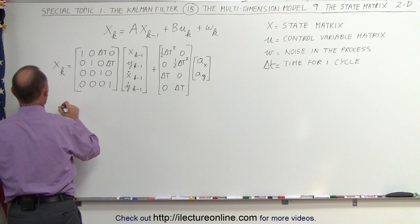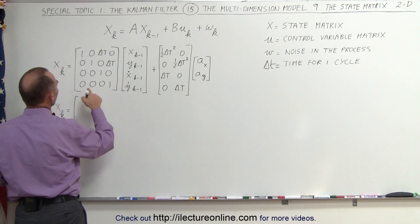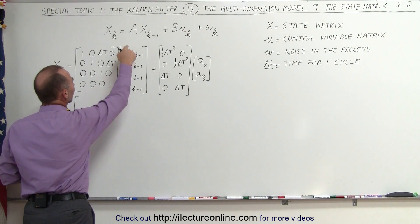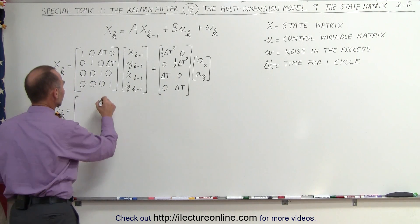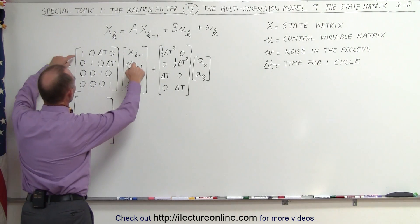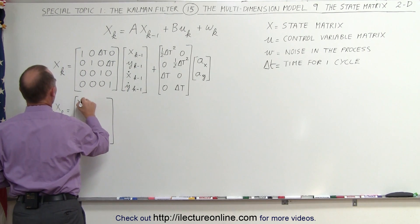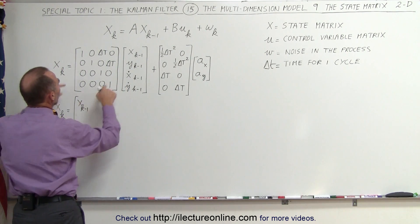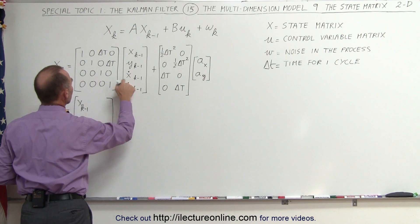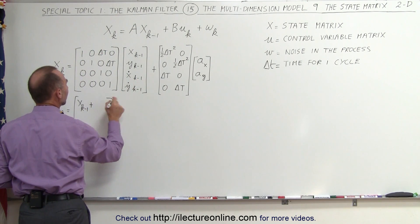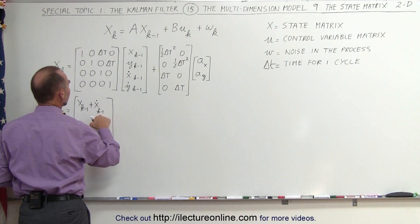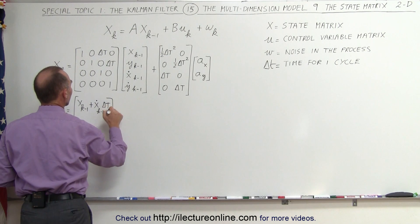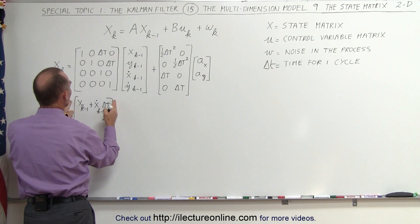This first matrix will look as follows. X sub k will be equal to — if we're multiplying a four-by-four matrix with a four-by-one matrix, we end up with a four-by-one matrix. The first matrix gives us X sub k minus one, that's a delta t ago, multiplied times the velocity in the x direction a delta t ago, times the delta t elapsed. That will be the adjustment for the x direction.